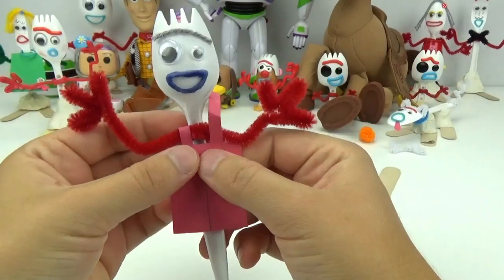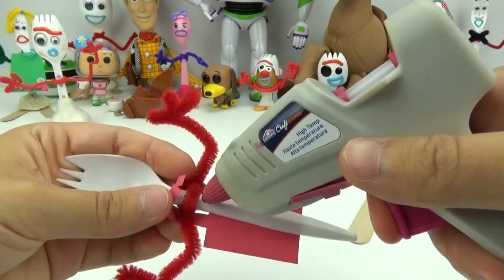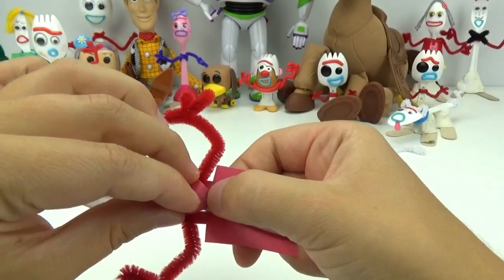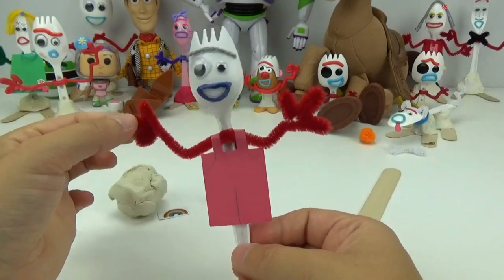I will place the overalls over top of him like this and put the straps to the back. Then, I will secure that down with some glue. I love how he is turning out! What do you guys think?